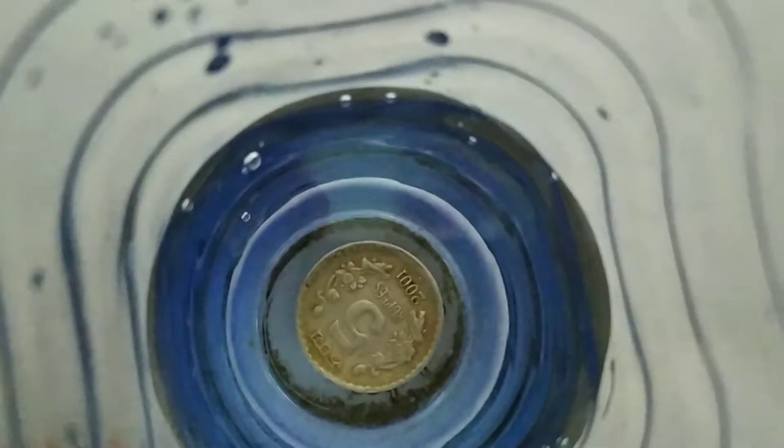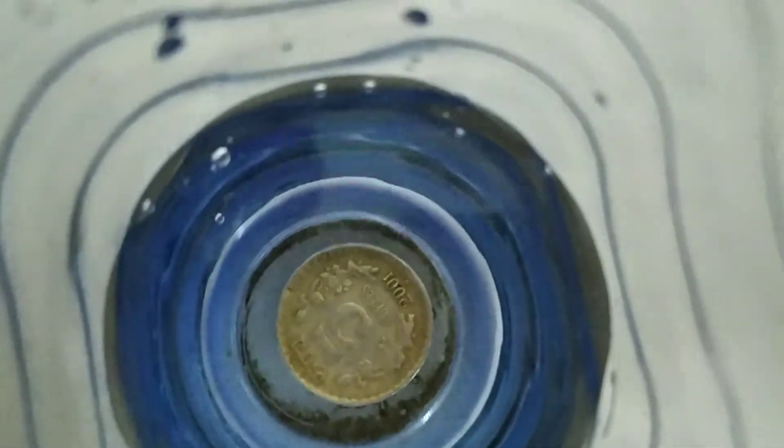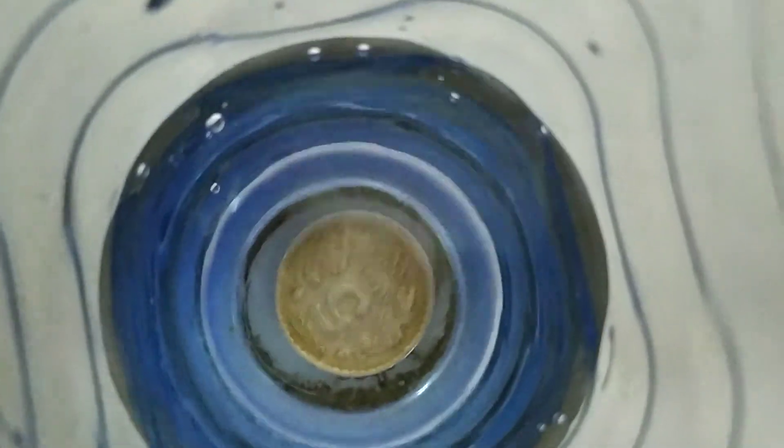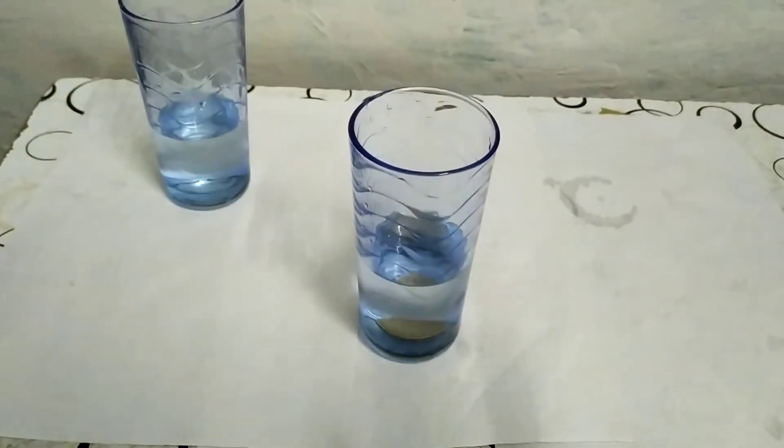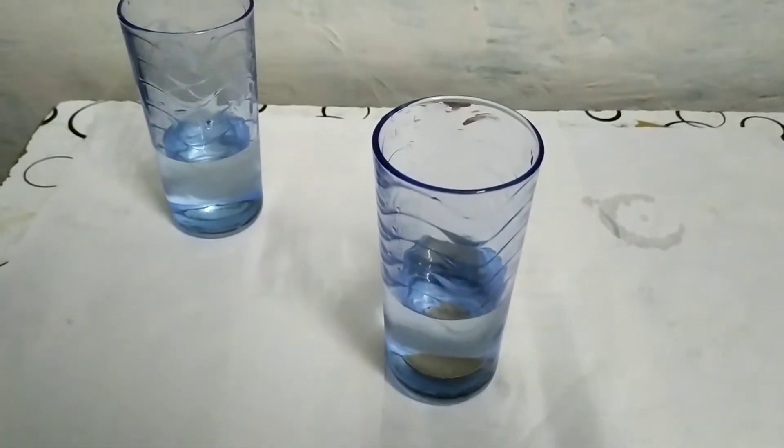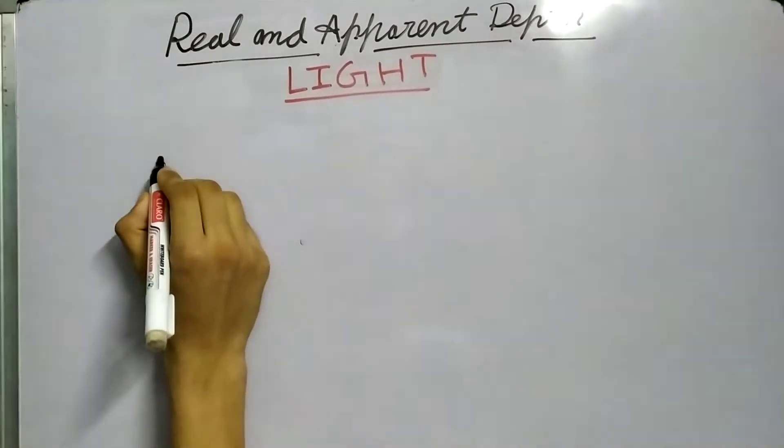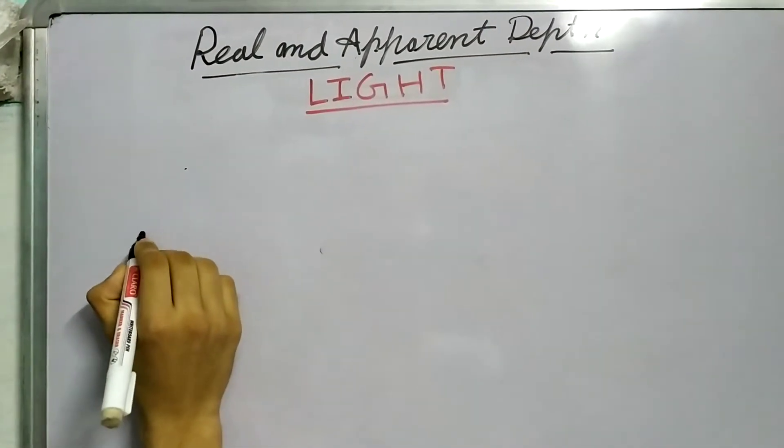It raised itself. So it appears to be shifted towards the observer, towards the camera. Why does this happen? How does this happen? We shall see. So let me draw its diagram. Let me draw the general diagram.